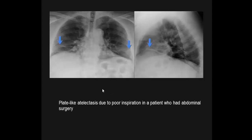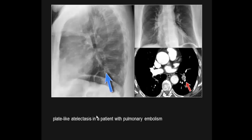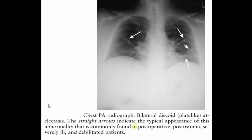Examples of plate-like atelectasis: due to poor inspiration in patients who had abdominal surgery; in a patient with pulmonary embolism; bilateral plate-like atelectasis with straight arrows indicating the typical appearance of this abnormality, commonly found in post-operative, post-trauma, severely ill, and depleted patients.